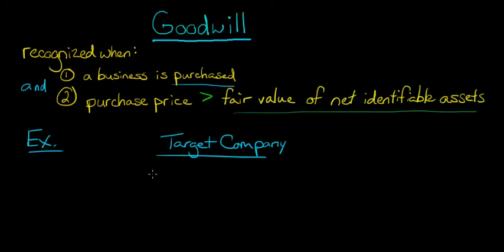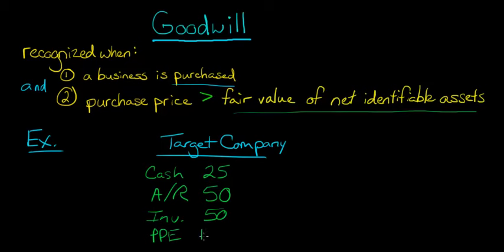So let's say in terms of assets, this company has cash of $25, accounts receivable of $50, inventory $50, and PP&E of $100.